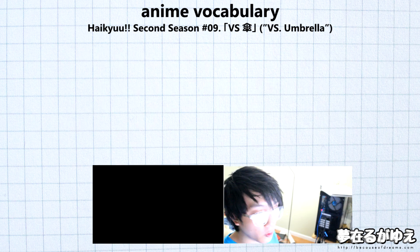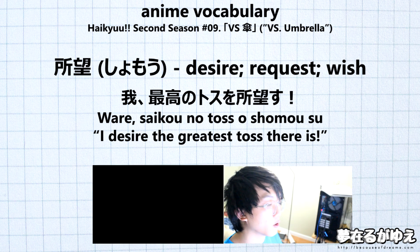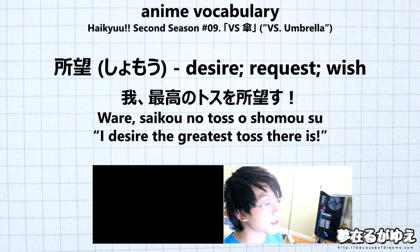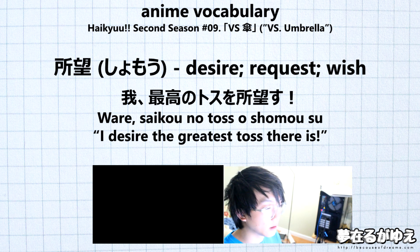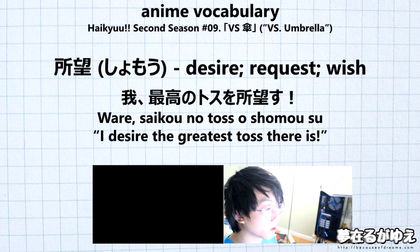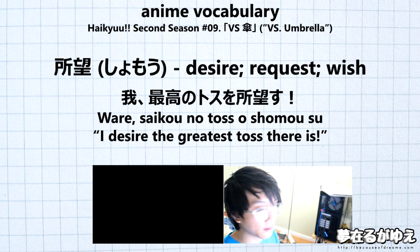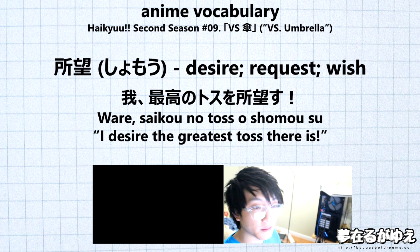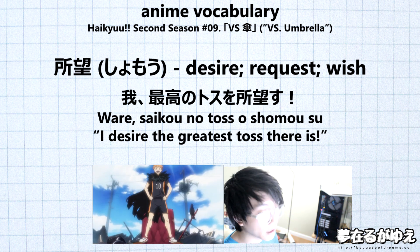For our next vocab word we have shomou, and this is going to mean 'desire,' 'request,' or 'wish.' The example sentence translates to 'I desire the greatest toss.' Breaking it down: ware means 'I,' used here because the speaker is acting like a king or royalty. Then saiko means 'greatest,' followed by the particle no, then tosu meaning 'toss' as in a volleyball toss — so saiko no tosu is 'the greatest toss.' Then o marks it as a direct object. Shomou is used as a verbal noun meaning 'to desire' or 'to request,' and the sentence ends with su for casualness. Full sentence: 'Ware! Saiko no tosu wo shomou su!' — 'I desire the greatest toss!'